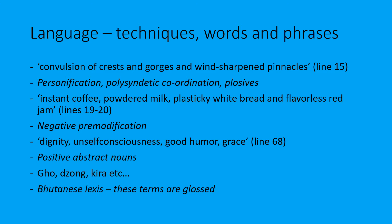On line 15, the landscape is described as 'a convulsion of crests and gorges and wind-sharpened pinnacles.' The word 'convulsion' is an example of personification - if your muscles convulse during a seizure, they twitch and jerk up and down. So it describes the landscape as if it is a person jerking and twitching - quite a violent word. There's also polysyndetic coordination in 'crests and gorges and wind-sharpened pinnacles' - the repetition of 'and' highlights that there are mountains everywhere you look.